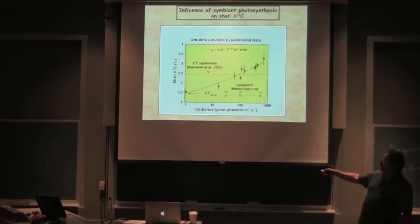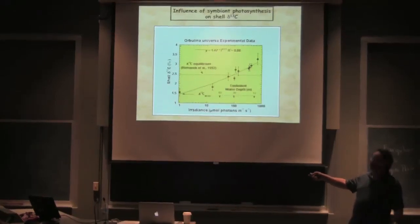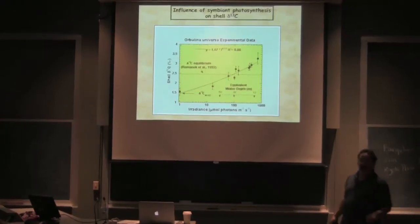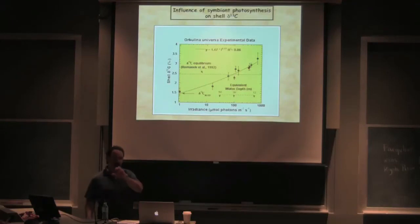What we find is when we grow these foraminifera in the laboratory under different light levels with delta-C13 DIC being constant, as you increase light levels or basically photosynthetic rate, the delta-C13 of the shells gets progressively enriched in C13. We've done these experiments many, many, many times and all we've done is tighten up this relationship.